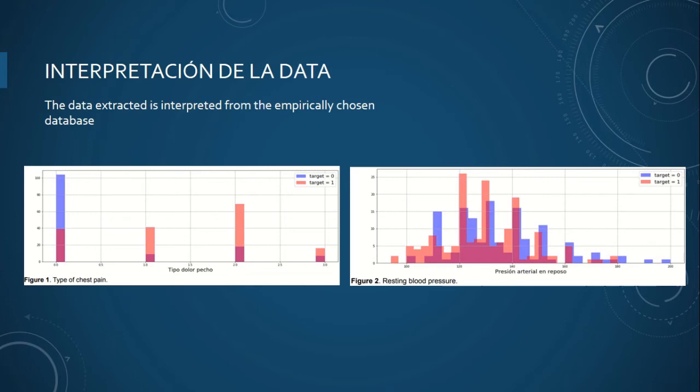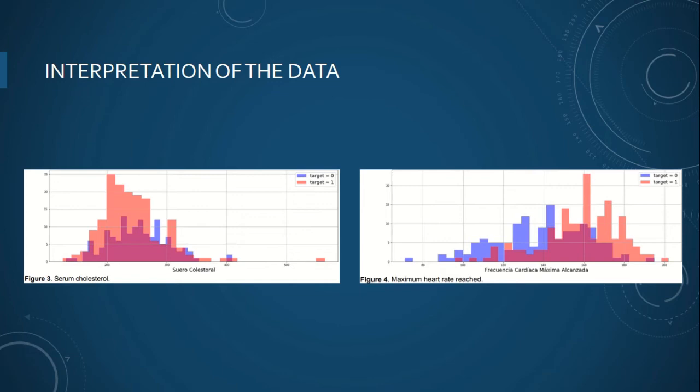How do we do the interpretation of the data? The data is extracted and interpreted from an empirically chosen database. We consider the arterial pressure, the resting blood pressure, the serum cholesterol, and also the fasting blood sugar.